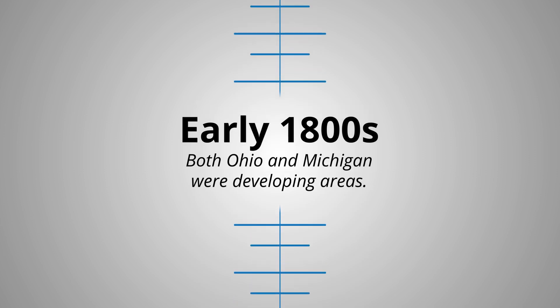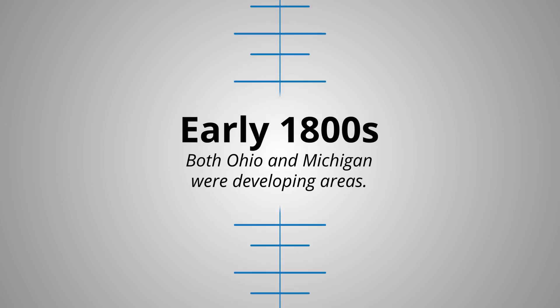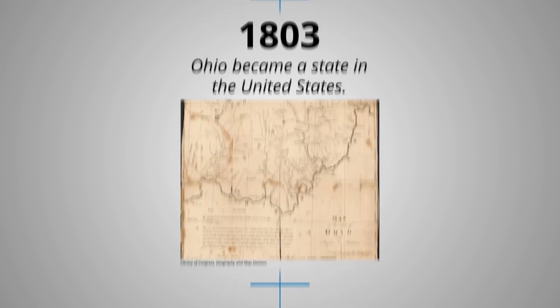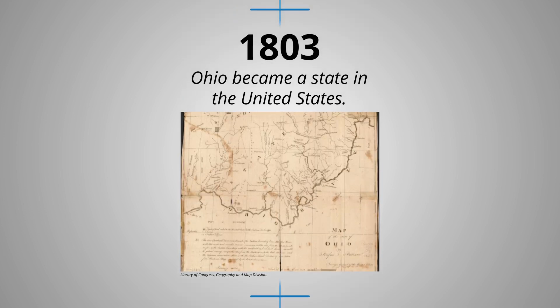In the early 1800s, both Ohio and Michigan were developing areas. In 1803, Ohio became a state in the United States. It's important to know that Ohio became a state before Michigan, because when Ohio became a state, there was some confusion about its northern borders.